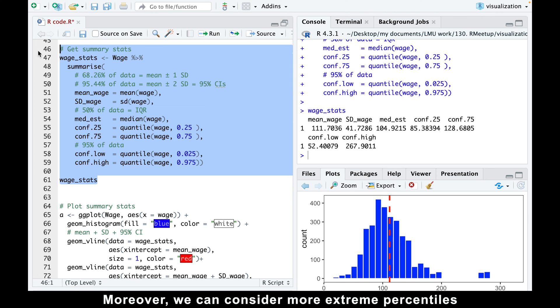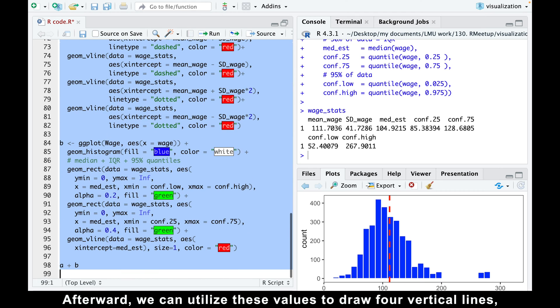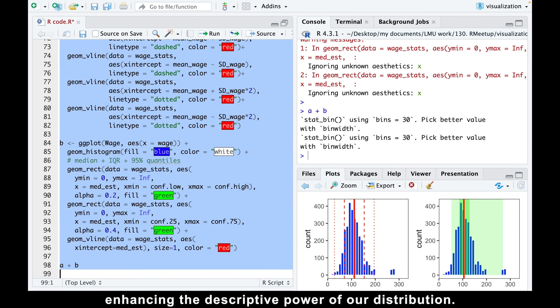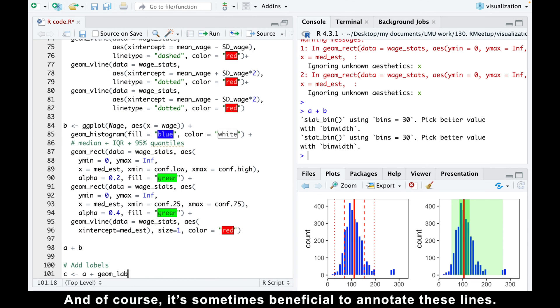Moreover, we can consider more extreme percentiles to identify where 95% of the salaries are located. Afterward, we can utilize these values to draw four vertical lines, enhancing the descriptive power of our distribution. And of course, it's sometimes beneficial to annotate these lines.